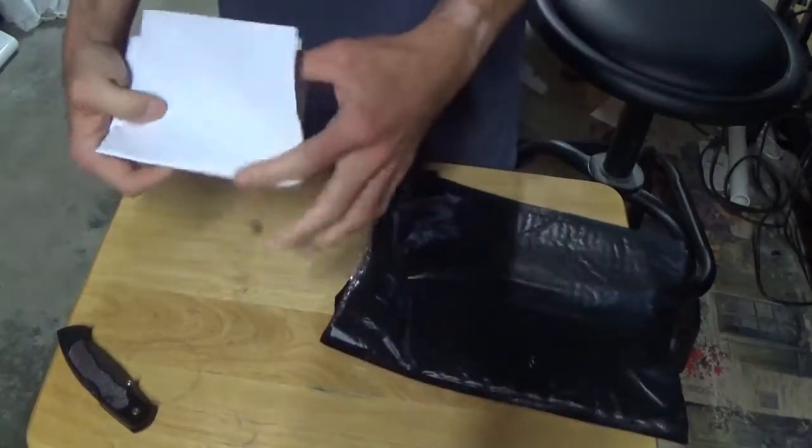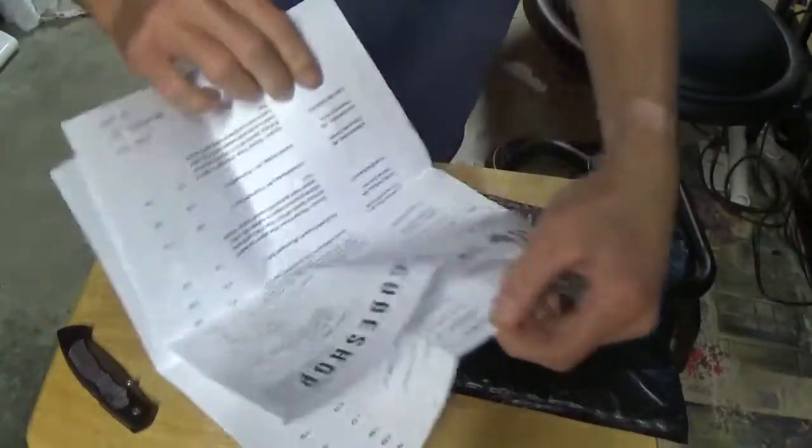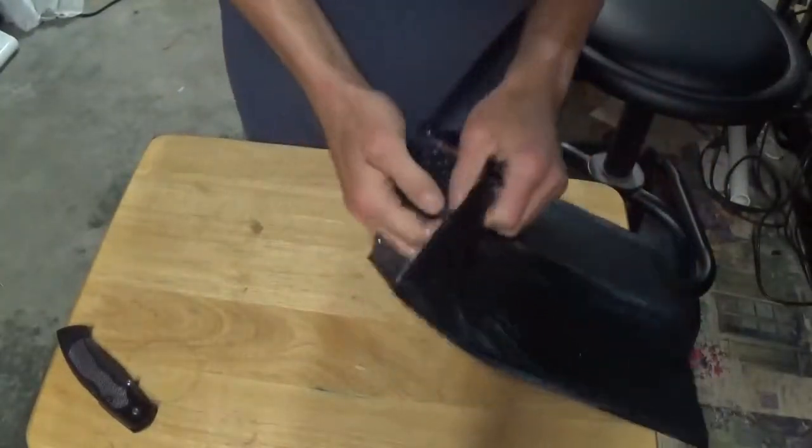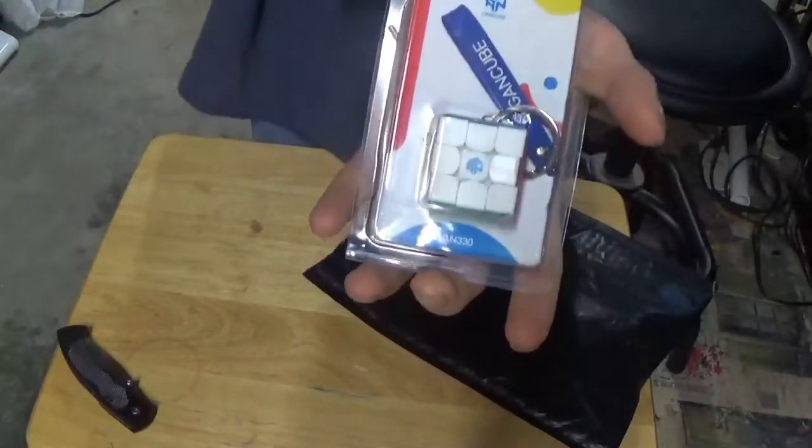Let's see here. Invoice that shows everything I got. Here is the GAN 330 QiCang Cube.